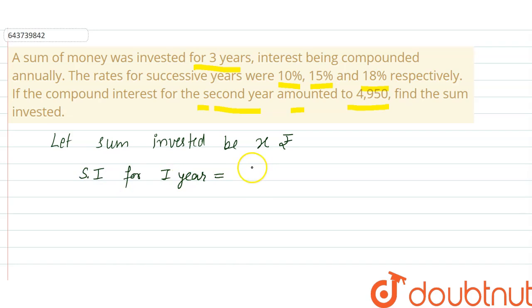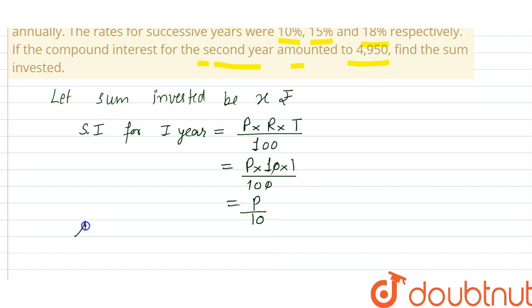From next year when interest is calculated on interest, then it becomes compound interest. So simple interest for first year: SI = (P × R × T) / 100 = (P × 10 × 1) / 100 = P/10. Now amount for second year.